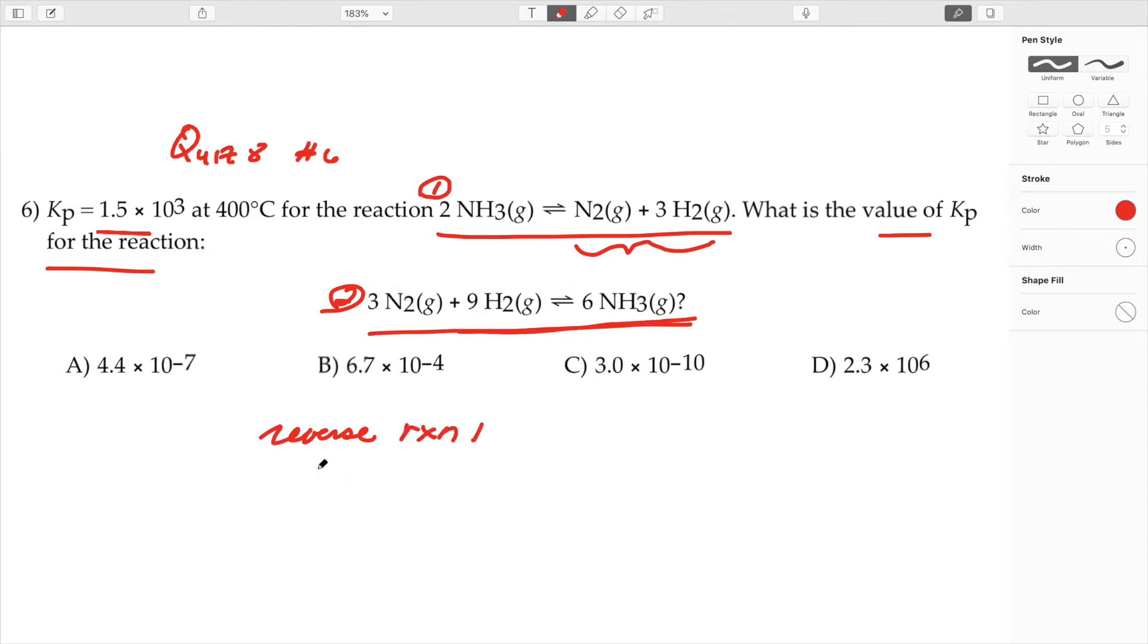When I do that I end up with nitrogen plus 3 hydrogens to give 2 ammonia. Now what I have to do is because I reversed the reaction I have to take the reciprocal of K.